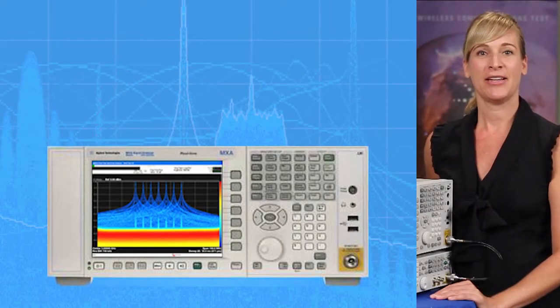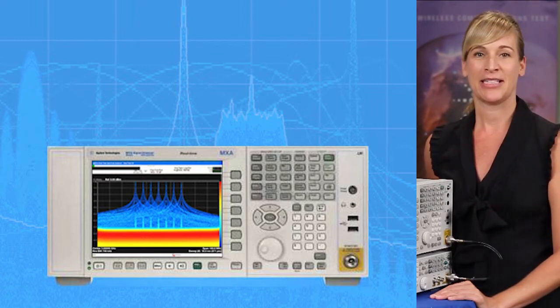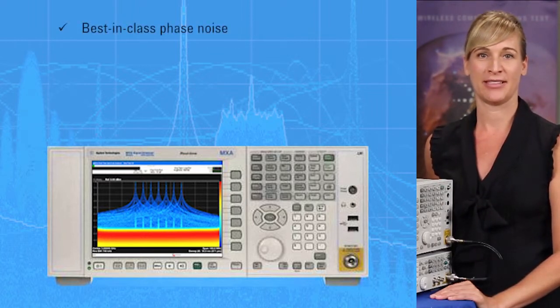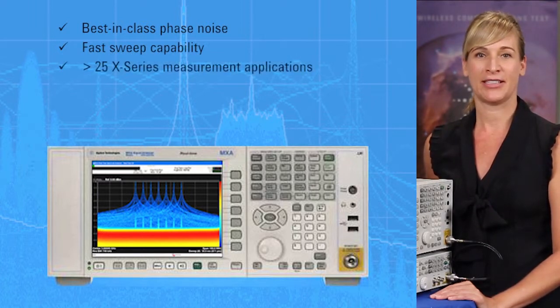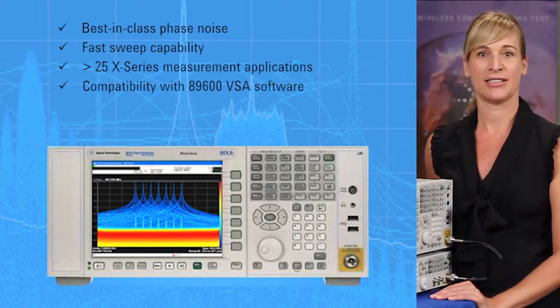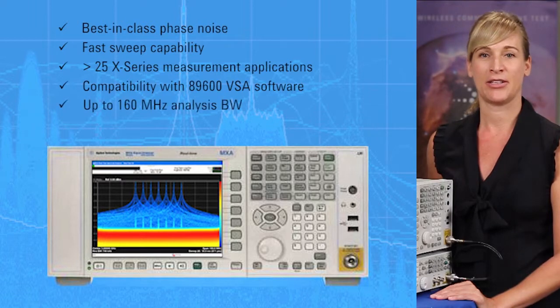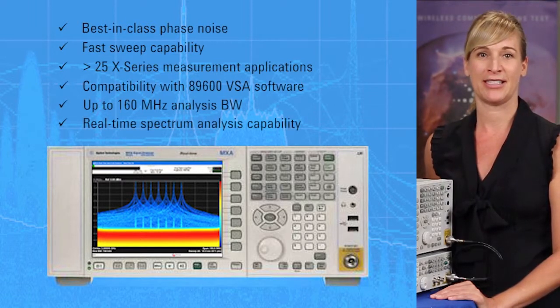In summary, with its frequency range from 10 Hz up to 26.5 GHz, best-in-class phase noise performance, fast sweep capability, over 25 X-Series measurement applications, compatibility with the Agilent 89600 VSA software, analysis bandwidth of up to 160 MHz, and real-time spectrum analysis capability,